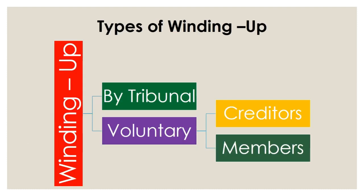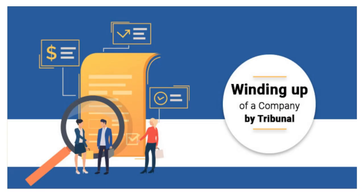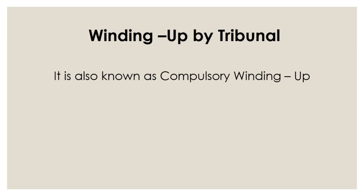Next is the types of winding up. The winding up is divided into two types: winding up by tribunal and winding up by voluntary. Voluntary winding up is again divided into creditors winding up and members winding up. In this video we are only discussing about the winding up of a company by tribunal, which is also known as the compulsory winding up of a company.